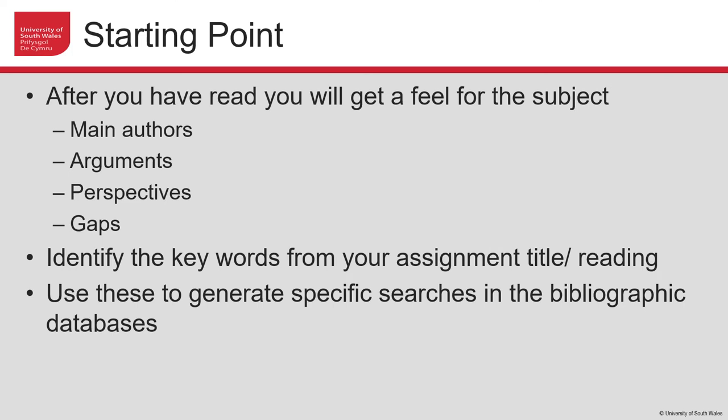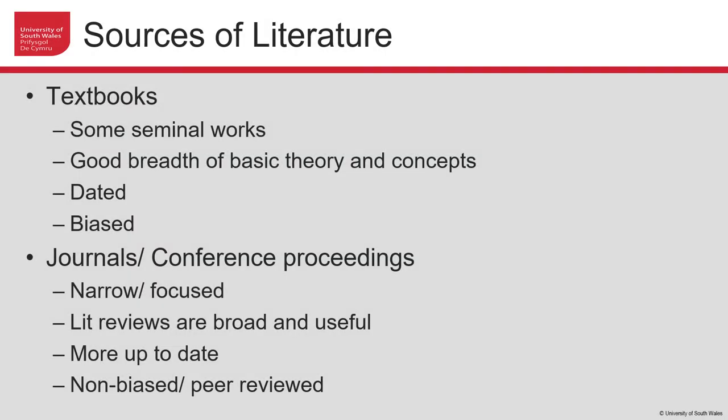Once you've done that reading, you'll get a feel for who the main authors are, what the main arguments and themes are, the different perspectives from which the subject is understood, and any gaps in the literature. What you then have to do is identify the keywords from the assignment title or reading, and from these keywords generate search terms you can enter into bibliographic databases to get the specific literature sources you need to inform your literature review.